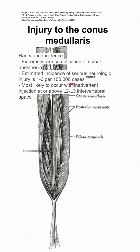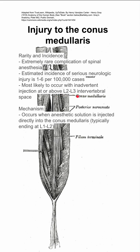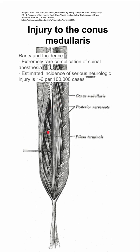It's most likely to occur with inadvertent injection at or above the L2 to L3 intervertebral space. This occurs when anesthetic solution is injected directly into the conus medullaris, which is typically at spinal level L1 to L2. You can see the conus medullaris here.